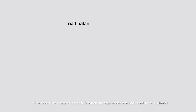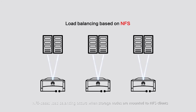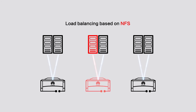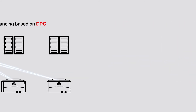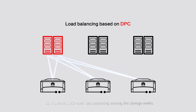NFS-based load balancing occurs when storage nodes are mounted to NFS clients, but a frequent problem is service burst, which may cause bottlenecks on a single storage node and impair performance of the entire system. However, DPC can connect to multiple storage nodes to implement IO-level load balancing among the storage nodes.